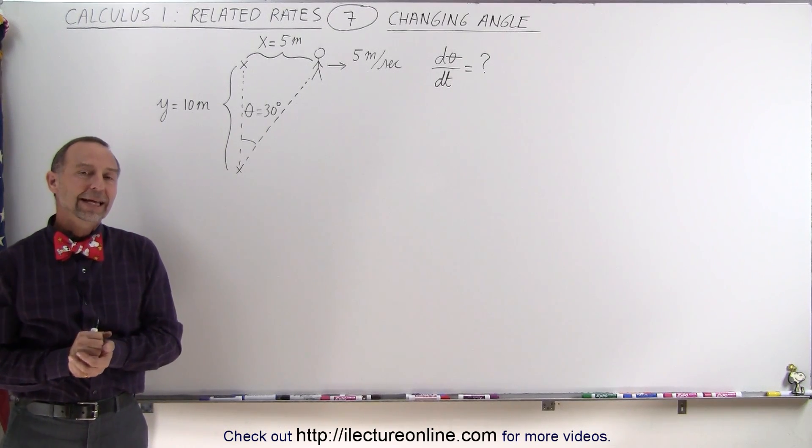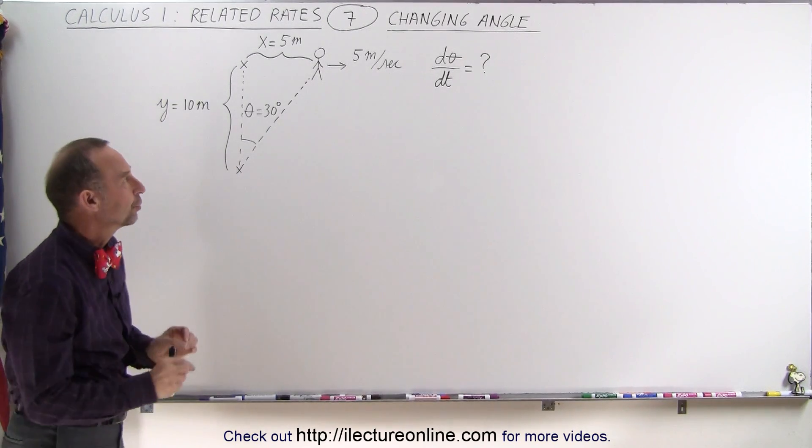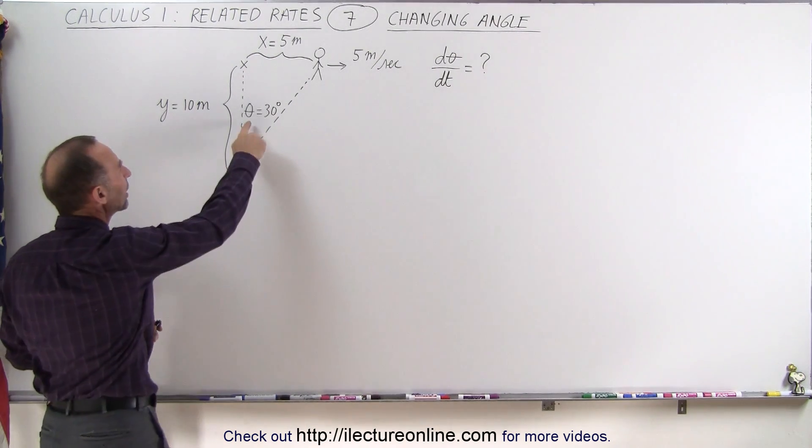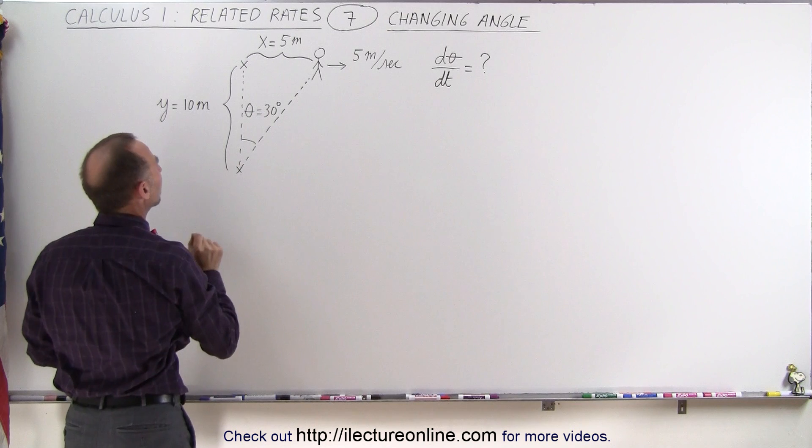Welcome to ElectronLine. In this problem we're trying to determine the rate of change of an angle. Which angle? The angle theta here which currently is 30 degrees.